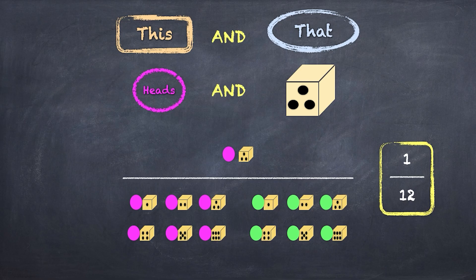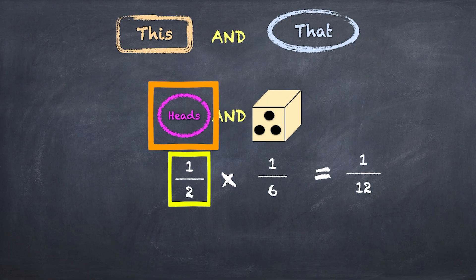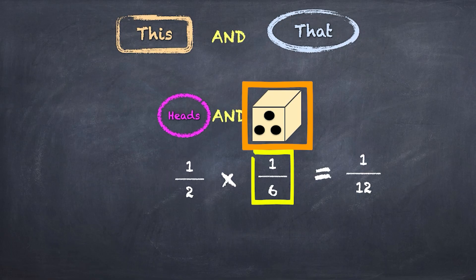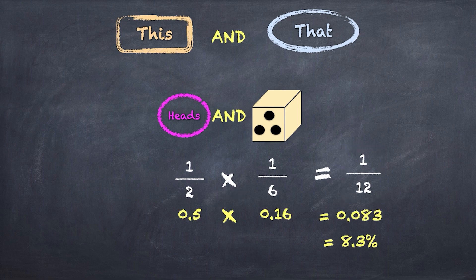So the probability of getting this combination is one over 12. But is there an easier way to get to the answer without having to count up all the possibilities? And the answer is yes — we can simply multiply the probability of each of these independent events to get the answer. So the probability of getting heads is one over two, and the probability of rolling a three is one over six. Multiply them together and voila, you get one over 12. We can quickly calculate that the probability is 8.3%.